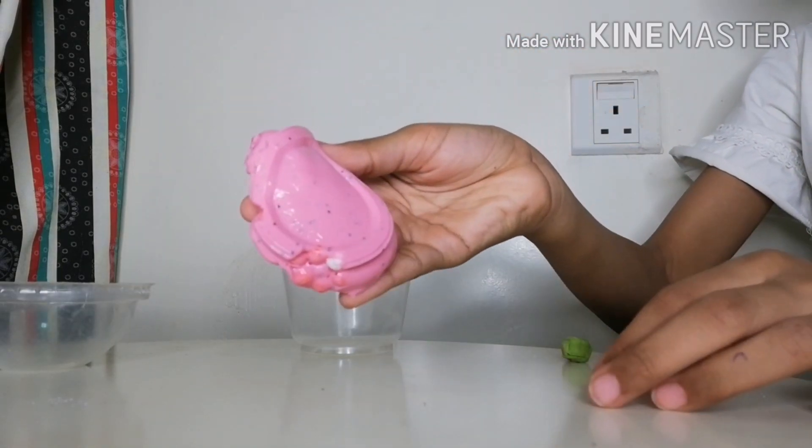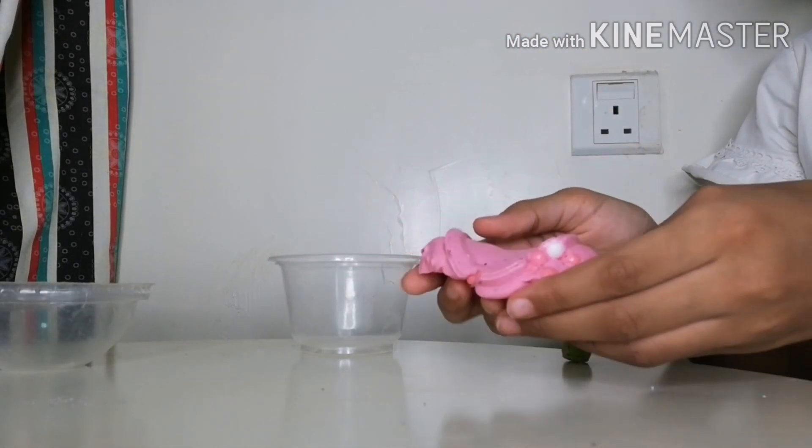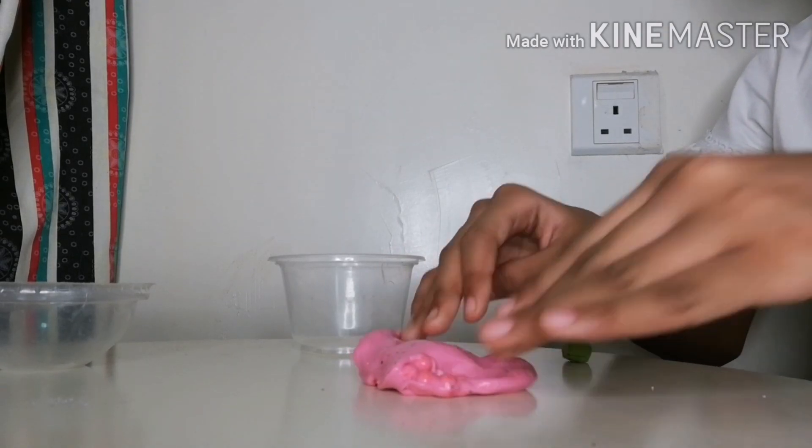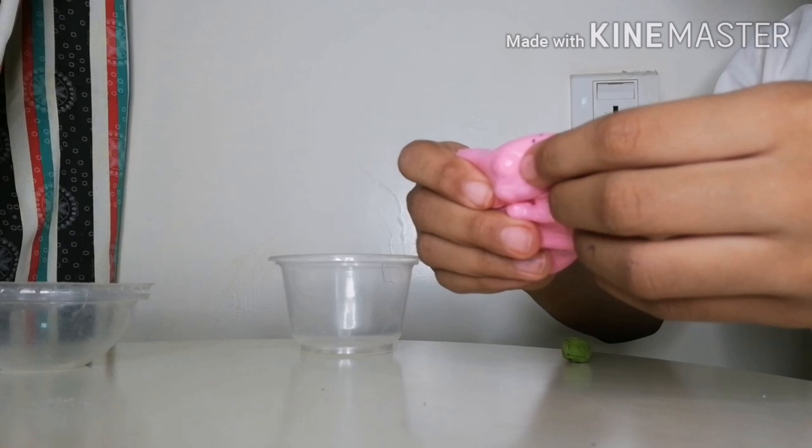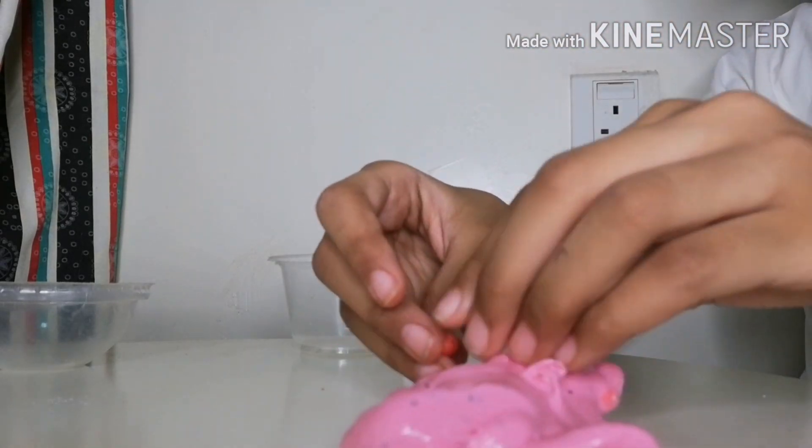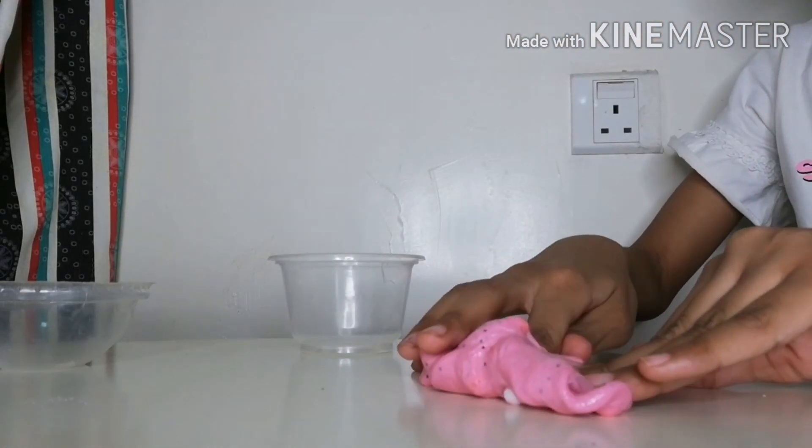Next is this strawberry themed slime. It has a very pinky bubblegum color, some white and red foam beads, some black glitter. The texture is a thick and glossy slime. I've worked a lot on this one and it's my favorite out of all.